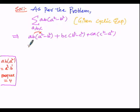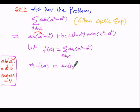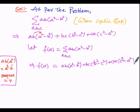Now we suppose the given cyclic expression as F of a. Let F of a equal sigma(ab(a² - b²)) with variables a, b, c. Then F of a equals ab(a² - b²) + bc(b² - c²) + ca(c² - a²), which is the elaboration we wrote in the previous step.